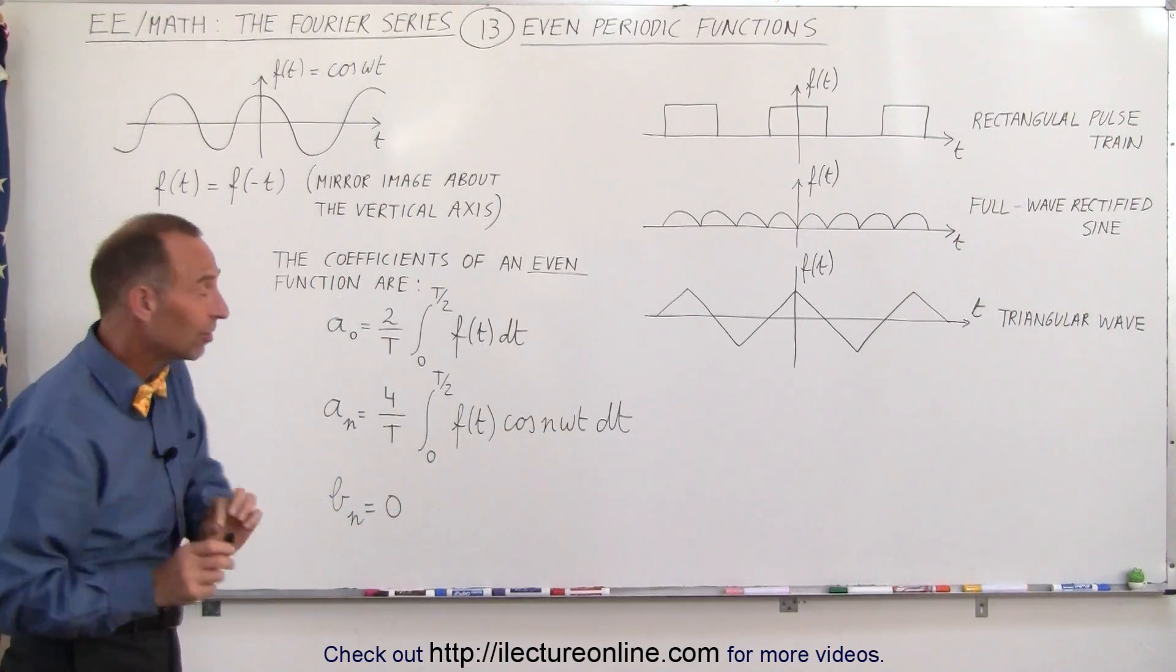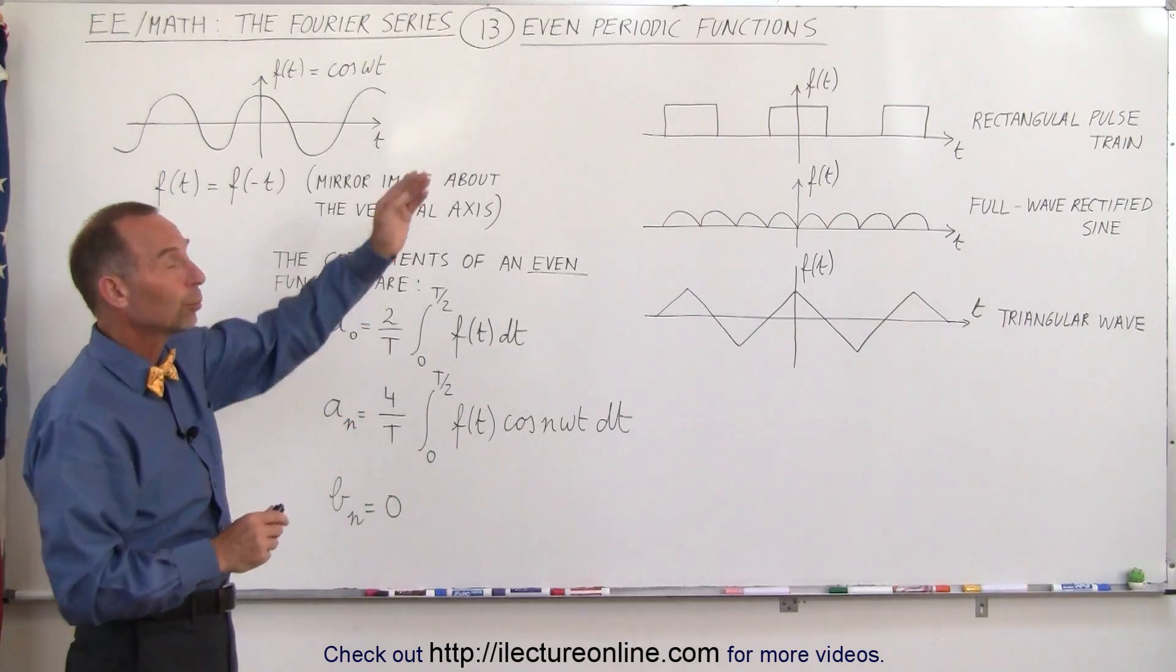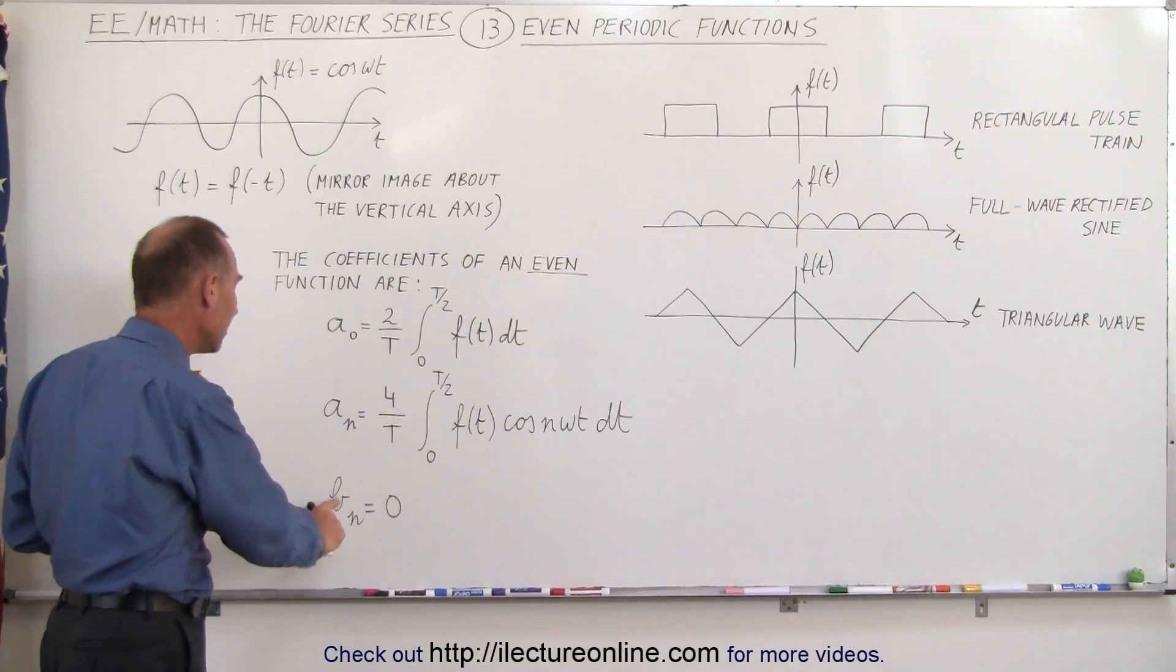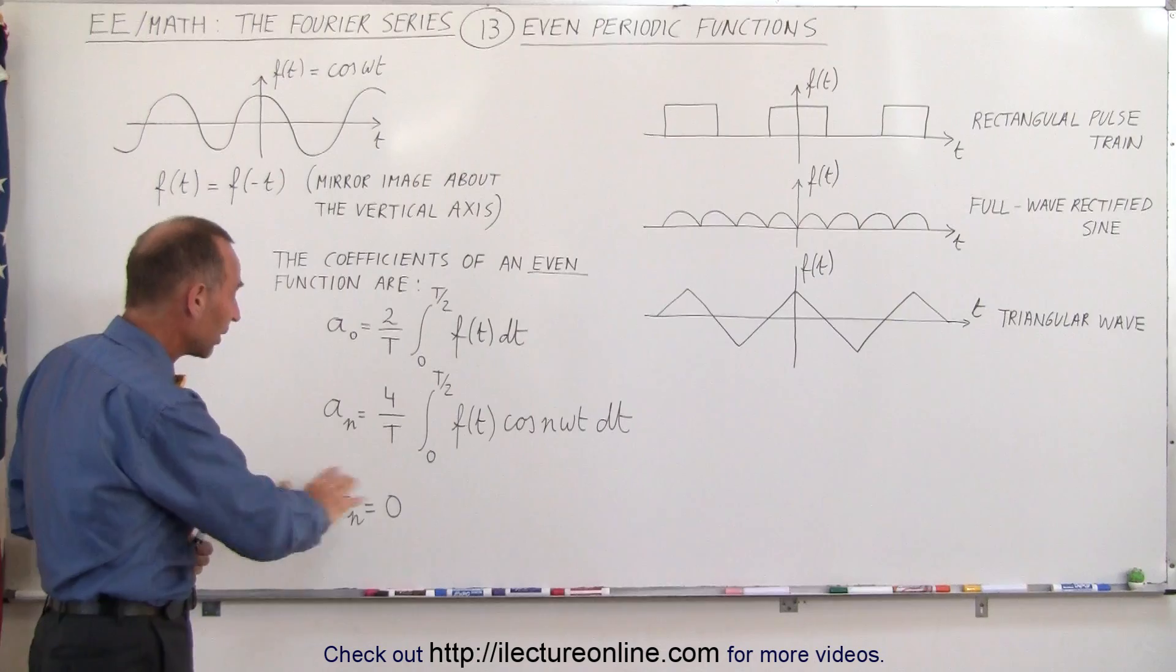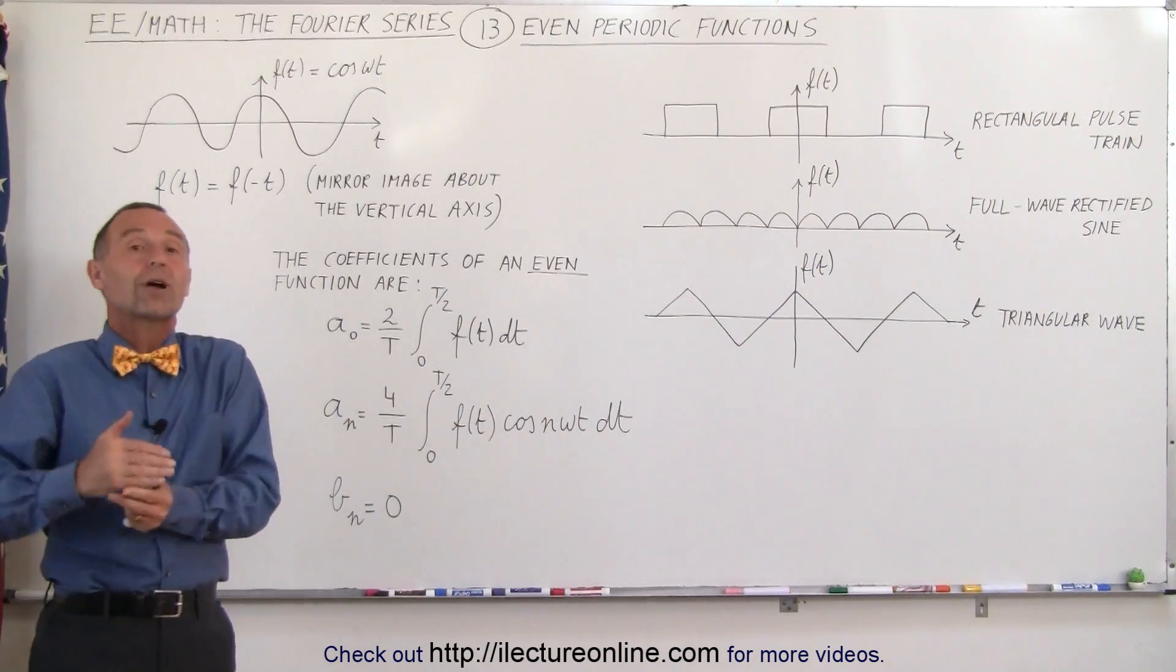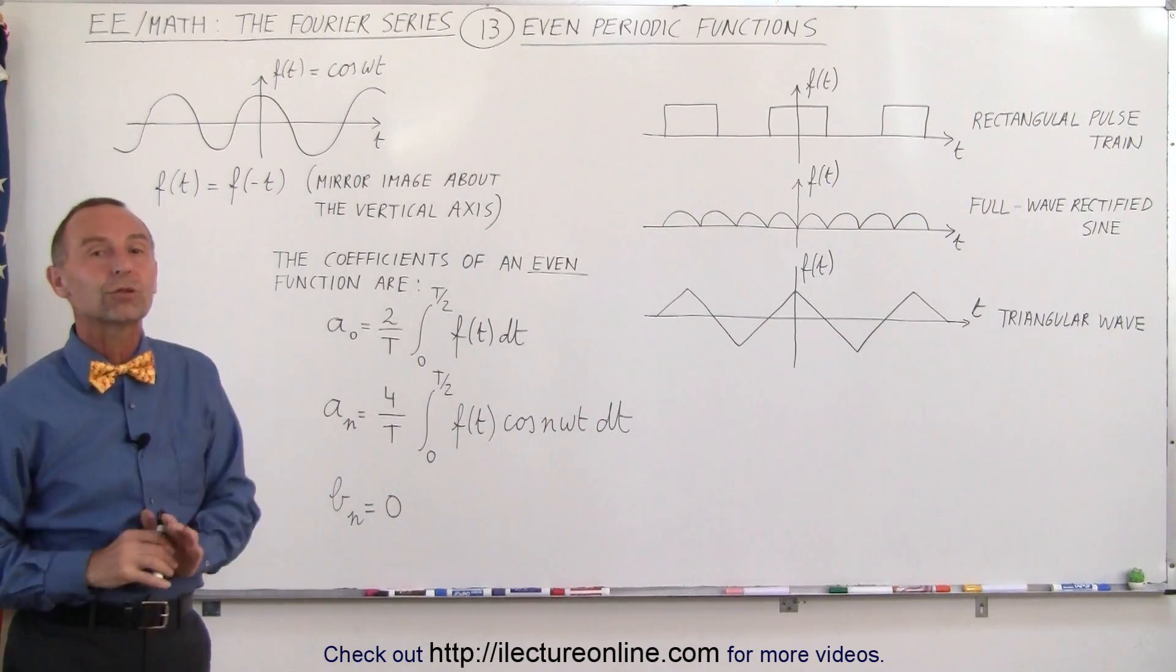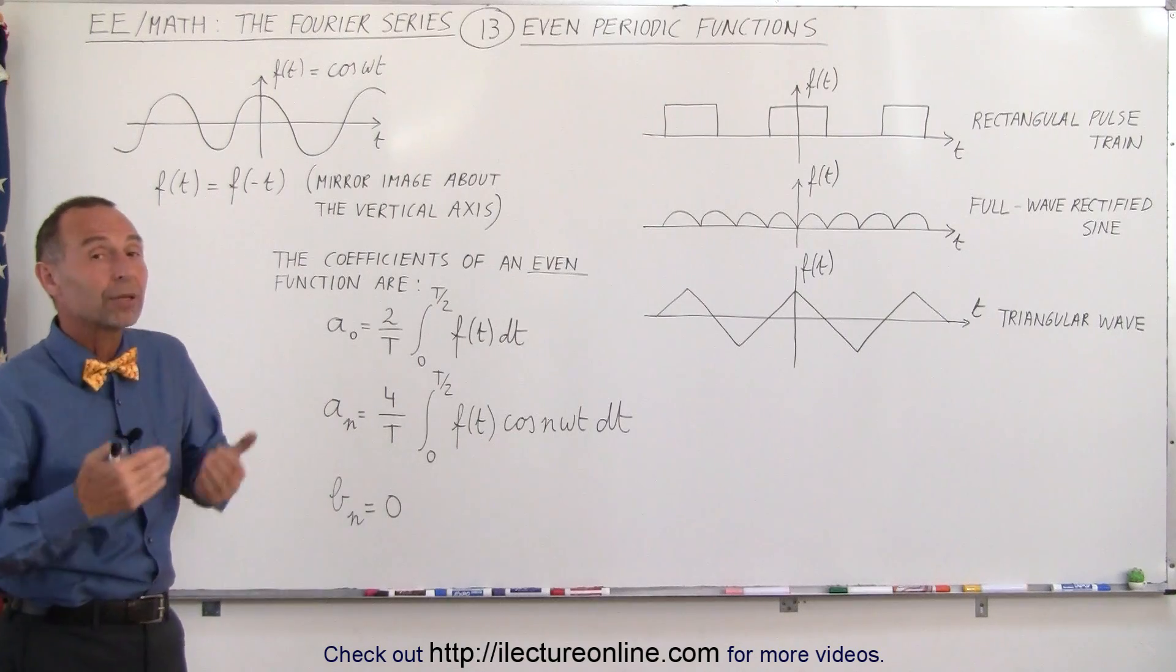But what's nice is when you're dealing with an even function, you do not have any bₙ terms. In other words, all the bₙ factors become equal to 0, and you don't have to try them out. You can simply not bother with those integrals, so it makes the job a lot easier.